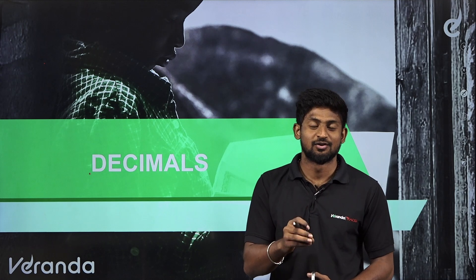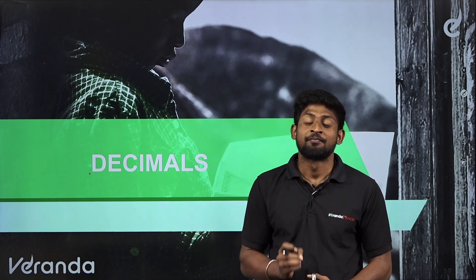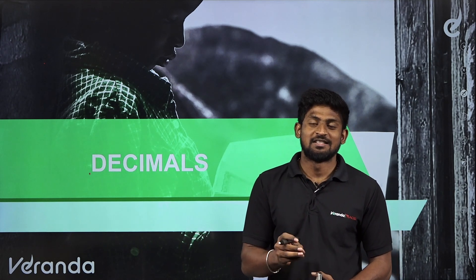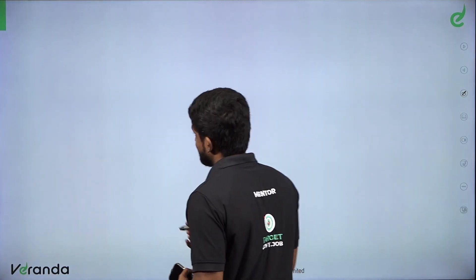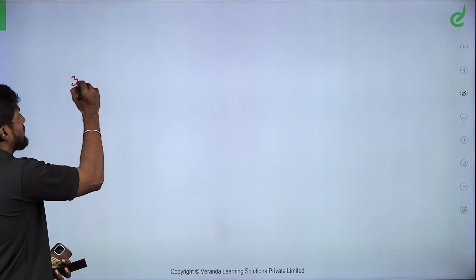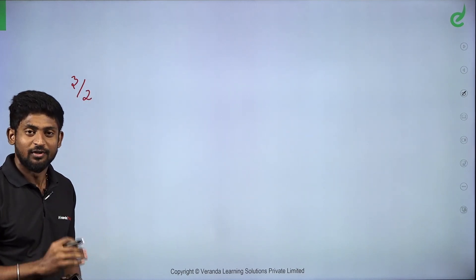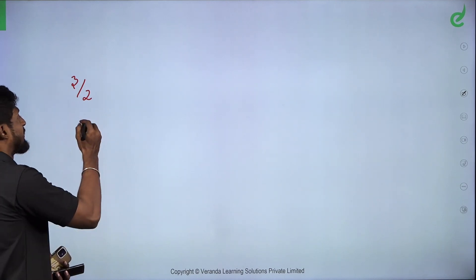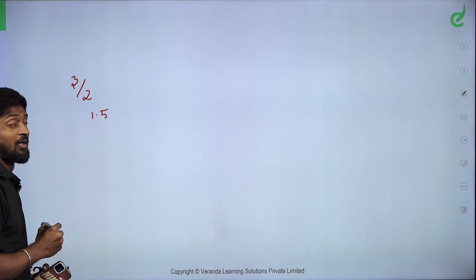We will talk about fractions and decimals. Why are we talking about pinnals? For fractions, we will talk about example 3 by 2. So if I tell about 3 by 2, I will talk about decimals.